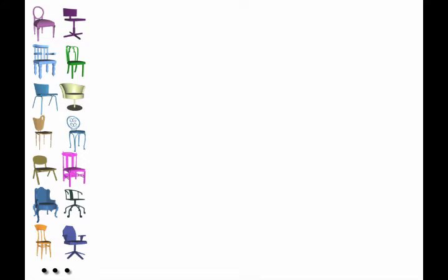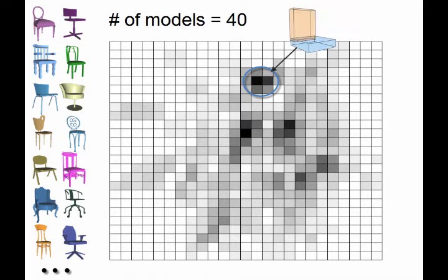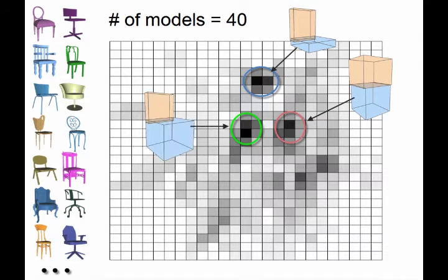Recurring part arrangements are unlikely to be artifacts of pure chance. As we investigate more models, the true recurring arrangements begin to emerge as arrangement clusters. For example, here we detect four clusters of part arrangements.